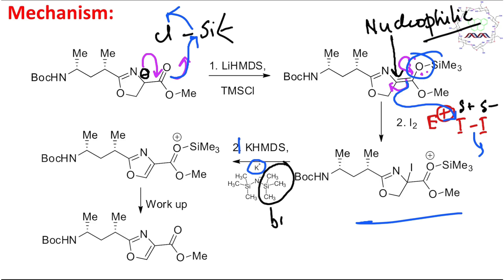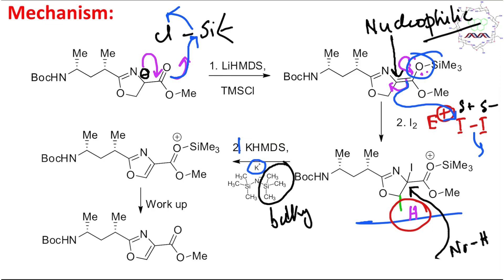In the next step, KHMDS abstracts a proton. You might ask why the base didn't abstract this proton in step one — because now, after iodine formation, that position has no hydrogen. There are two competing protons: H-a (already gone) versus H-b. If H-b is abstracted by the base, the aromatic moiety — specifically an oxazole derivative — can be produced.